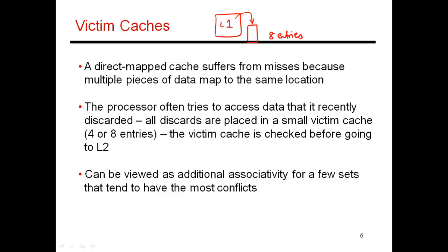The hope is that a block got evicted due to conflict for a given set, and will be touched again in the near future. When looking up this buffer, all entries are checked at the same time that one or two entries in the L1 cache are looked up — the victim cache is looked up in parallel with the L1. If data is found in the victim buffer, it avoids having to go all the way to L2. The victim buffer is a fully associative structure because the block could be in any of those eight entries.